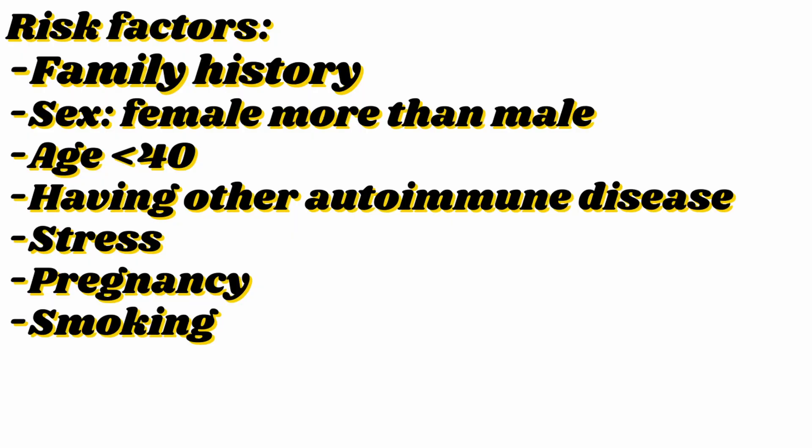Family history is number one — if there's a family history of this autoimmune disorder, you are at higher risk. Sex: women are more likely to get Graves' than men. Age: under 40, younger people. Having other autoimmune disorders like type 1 diabetes and rheumatoid arthritis. Emotional and physical stress, pregnancy, and smoking also put you at higher risk. The modifiable factors are smoking and decreasing your stress level, which can help prevent development of Graves' disease.